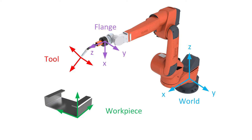In principle, a distinction is made between the tool coordinate system in red and the workpiece coordinate system in green. The tool coordinate system is defined relative to the tool mounted on the robot flange. The workpiece coordinate system is defined relative to the workpiece to be machined. The robot flange coordinate system is a tool coordinate system predefined by the manufacturer — it is the default tool coordinate system if you have not defined any other. Accordingly, the world coordinate system is the standard workpiece coordinate system, also predefined by the manufacturer.